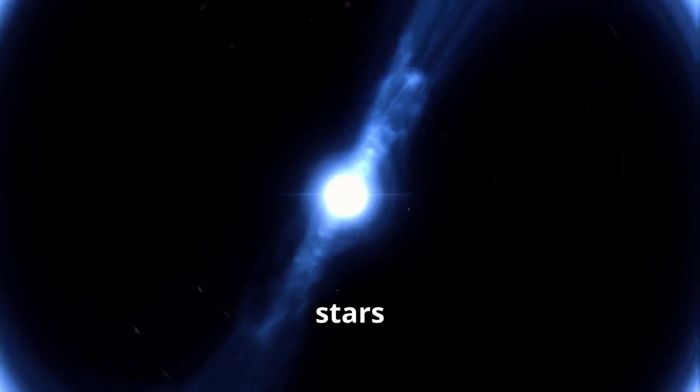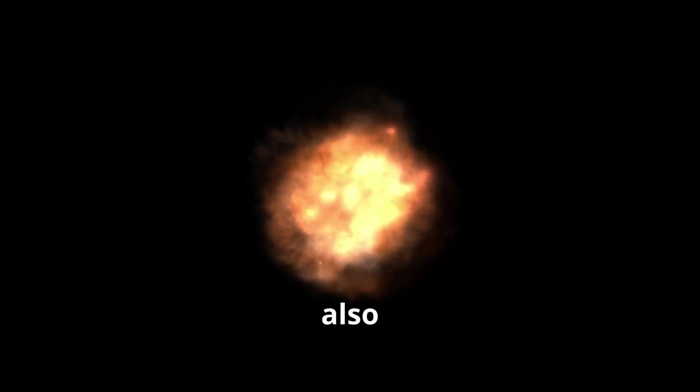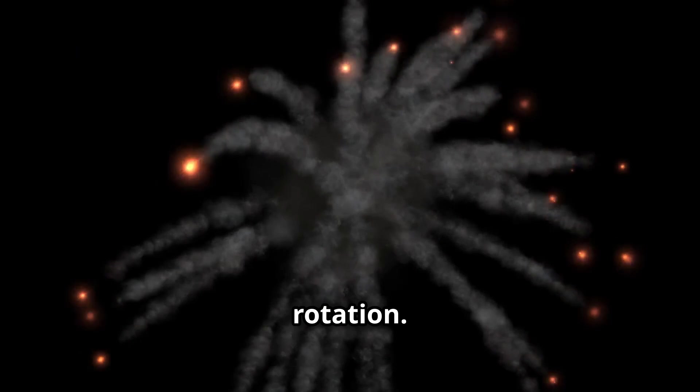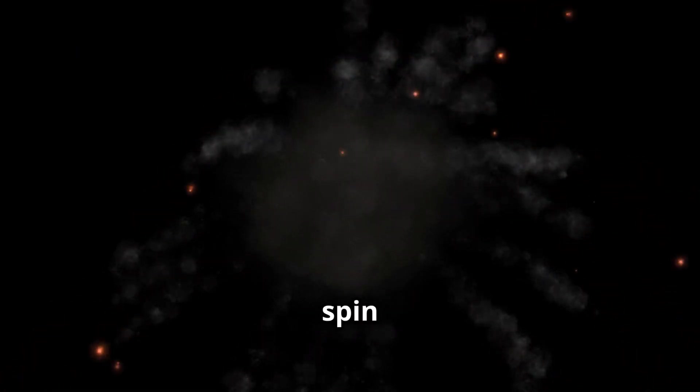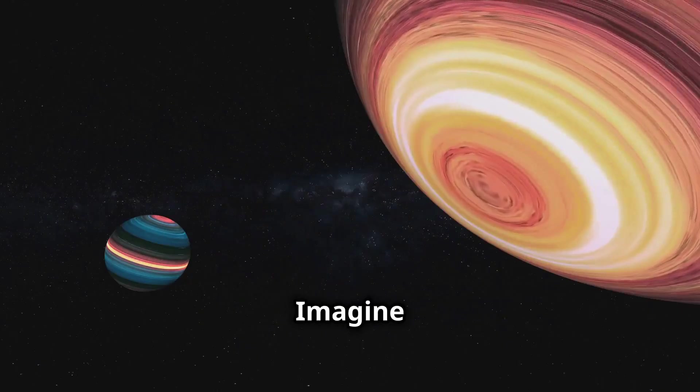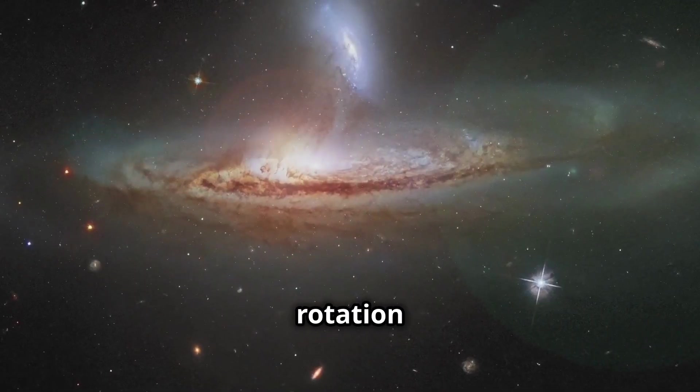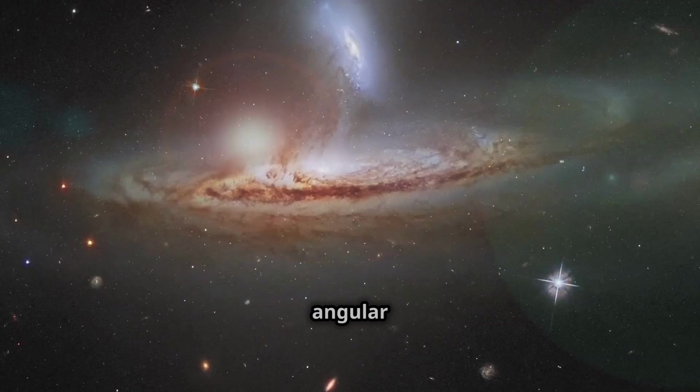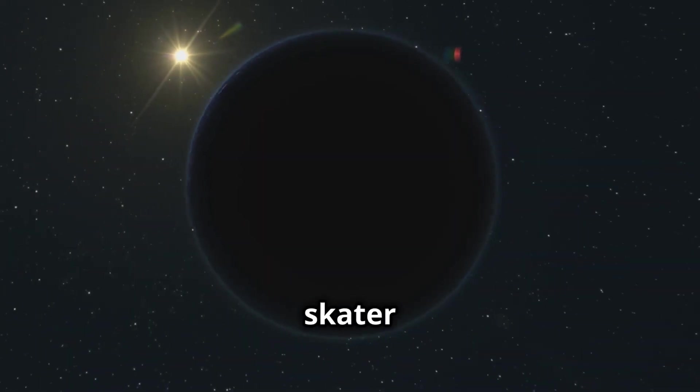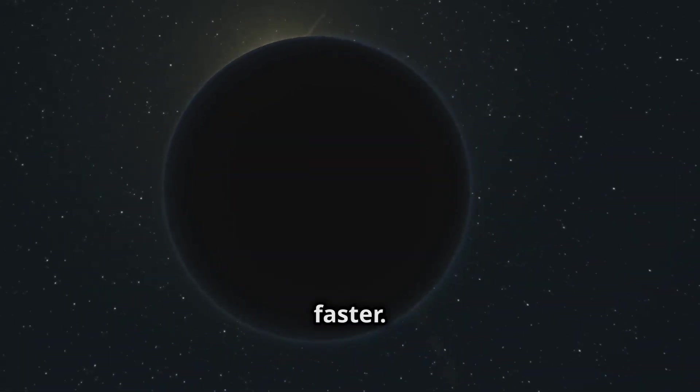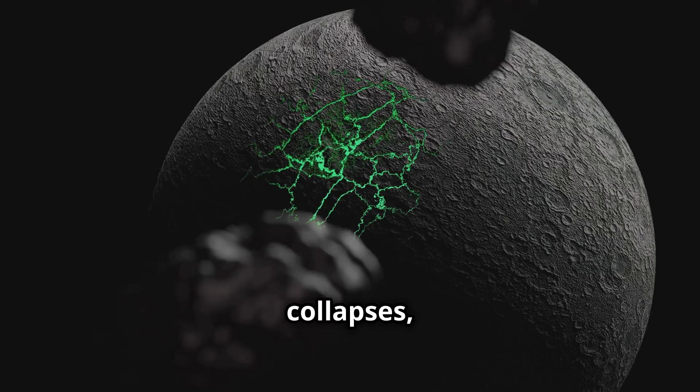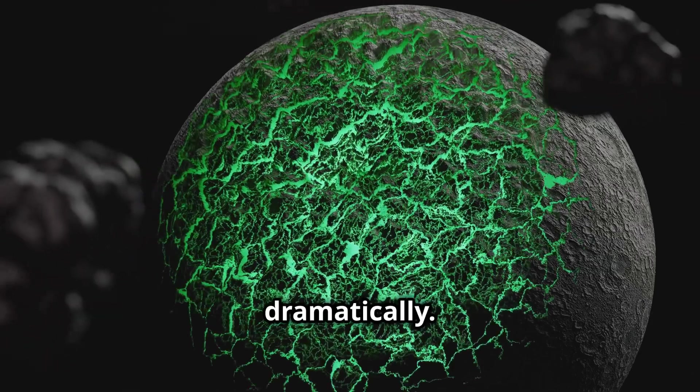Now, neutron stars are not only incredibly dense, but they're also famous for their rapid rotation. Many neutron stars spin hundreds of times per second. Imagine that, an object more massive than our sun spinning like a cosmic top. This rapid rotation is a consequence of the conservation of angular momentum. Think about a figure skater pulling in their arms to spin faster. As a star collapses, its rotation speeds up dramatically.